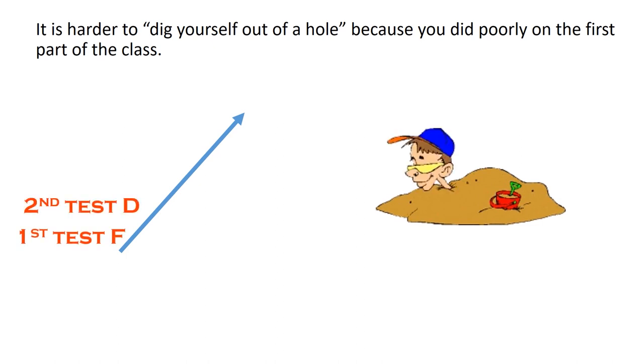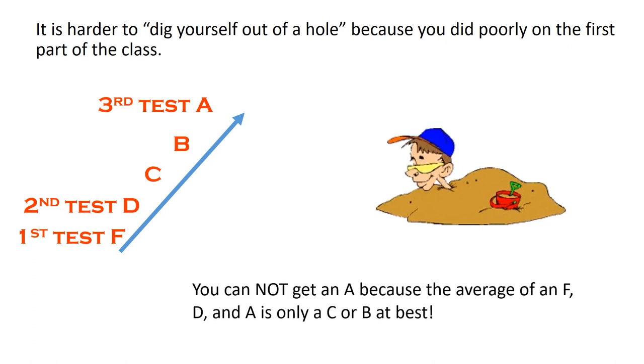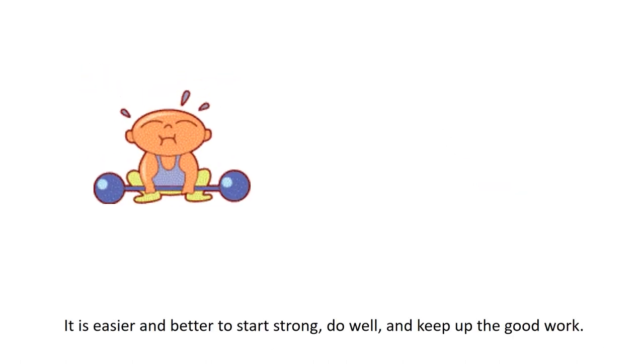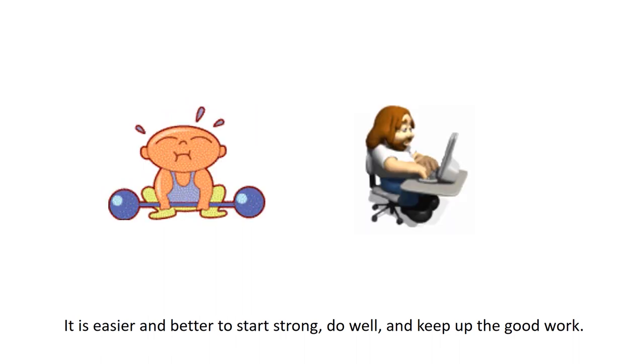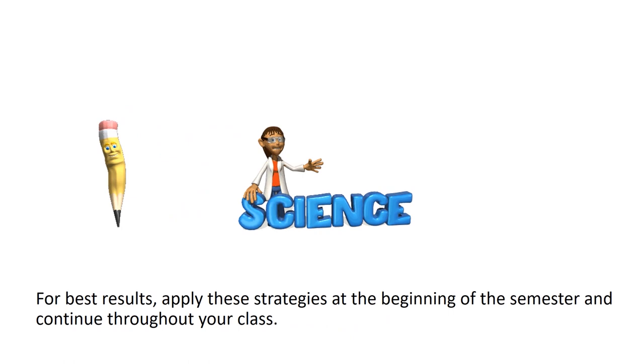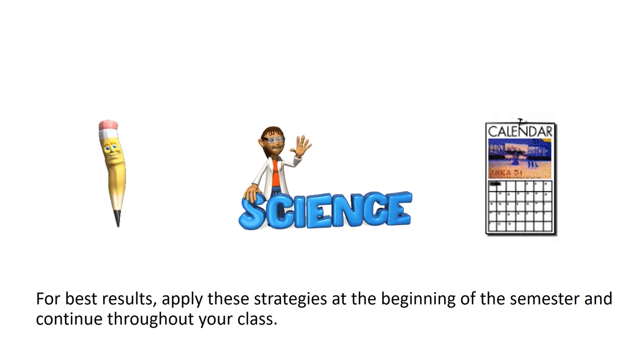If on the first test you got an F, the second test you got a D, and on the third test you got an A, you cannot get an A because the average of an F, D, and A is only a C or B at best. It is easier and better to start strong, do well, and keep up the good work. For best results, apply these strategies at the beginning of the semester and continue throughout your class.